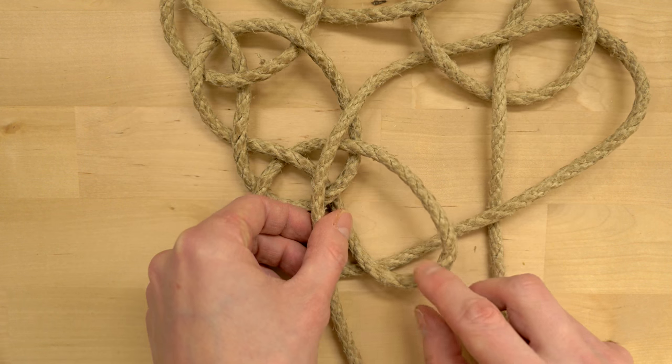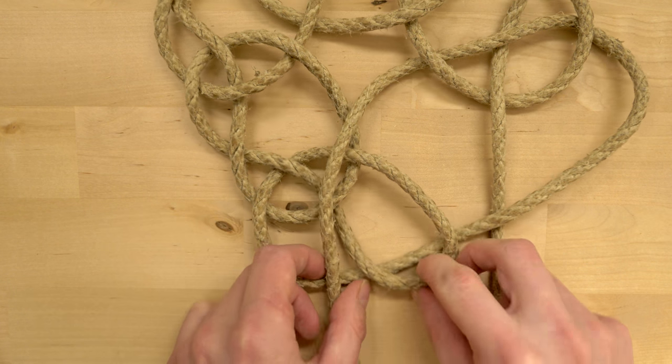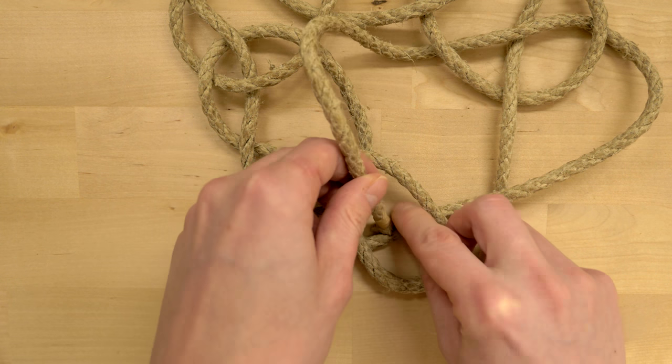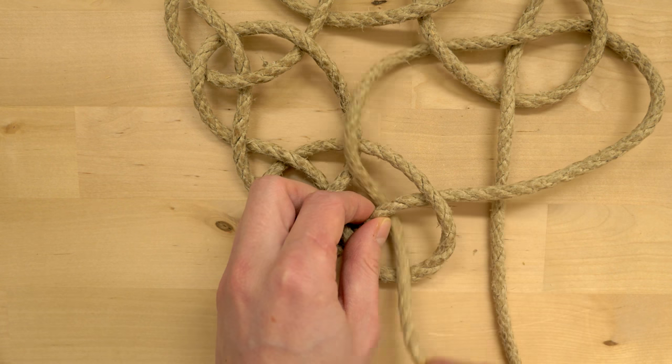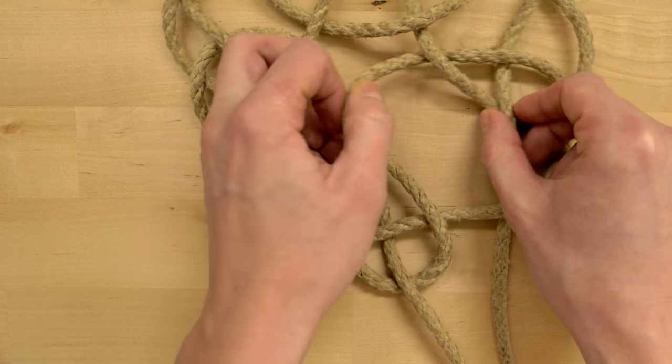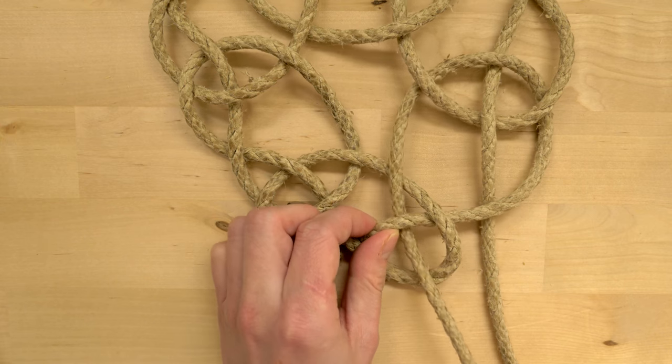And then we are going over, under, over, and then split this loop at the bottom by going over, under, over. And by doing this we have tied our Kringle mat.